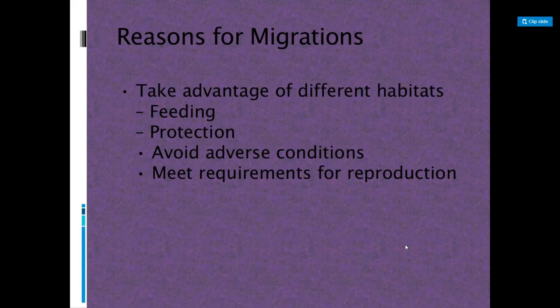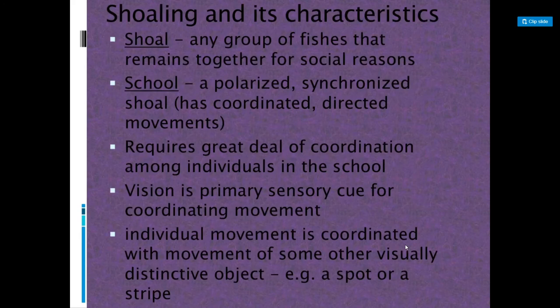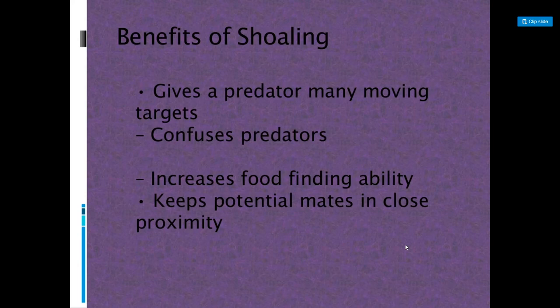Reasons for migration include taking advantage of different habitats for feeding and protection, avoiding adverse conditions, and meeting requirements for reproduction. Shoaling and its characteristics: a shoal is any group of fish that remain together for social reasons. A school is a polarized, synchronized shoal — as seen in a bait ball — requiring great coordination among individuals. Vision is the primary sensory cue for coordinated movement, along with the lateral line. Benefits of shoaling include giving predators more moving targets, confusing predators, increasing food-finding ability, and keeping potential mates in close proximity.